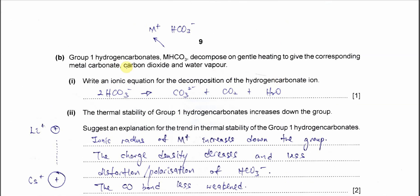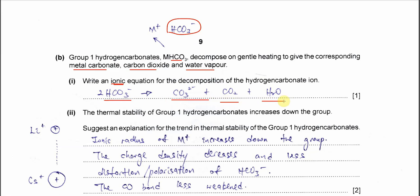For part b, Group 1 hydrogen carbonate — where M is a Group 1 metal — decomposes on heating to give metal carbonate, CO₂, and water vapor. From this statement, construct an ionic equation for the decomposition of the hydrogen carbonate ion. The hydrogen carbonate ion is HCO₃⁻. It decomposes to give carbonate ion, CO₂, and H₂O. You just need to write and balance this equation.